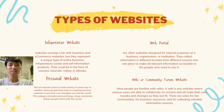The last type is a Wiki or Community Forum Website. Most people are familiar with wikis. A wiki is a website where various users are able to collaborate on content and all make their own tweaks and changes. There are wikis for fan communities, for business resources, and for collecting valuable information. The example is Wikipedia.